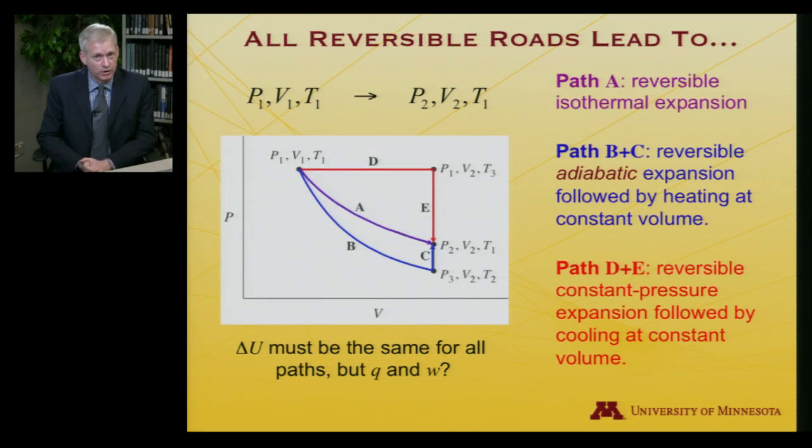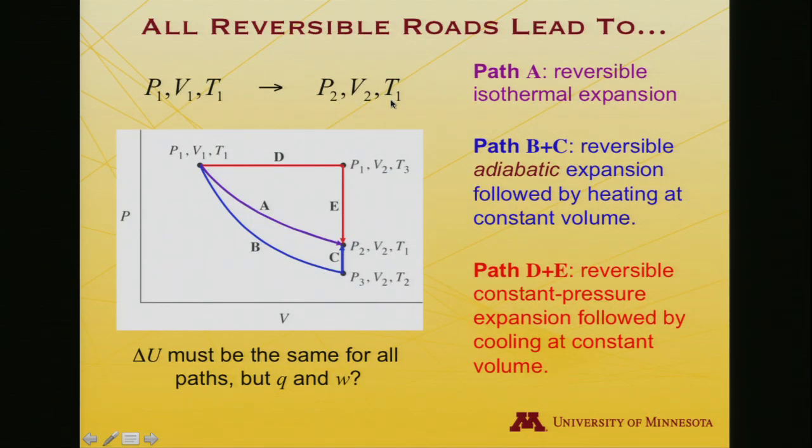We're now going to look at characteristic ideal gas expansion paths. So we've got a roadmap and it's time to follow some roads. I'll remind you that we're going to consider three paths: a reversible isothermal expansion that'll take us from conditions P1, V1, T1 to P2, V2, T1, so the final temperature is the same as the initial temperature. We're going to consider an adiabatic expansion followed by heating at constant volume, and a reversible constant pressure expansion followed by cooling at constant volume.